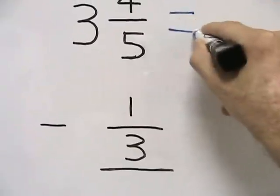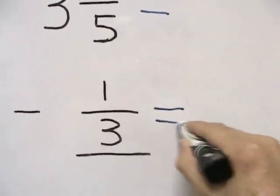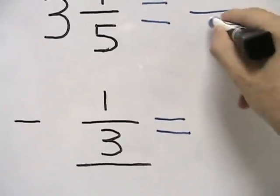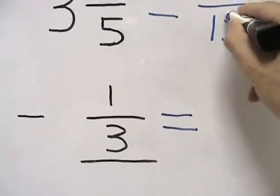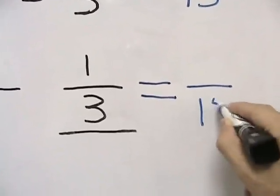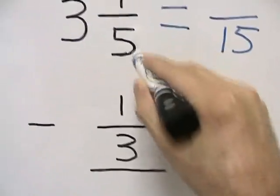So in this case, our LCD will be 15, since 15 is the smallest number that's divisible by both five and three.